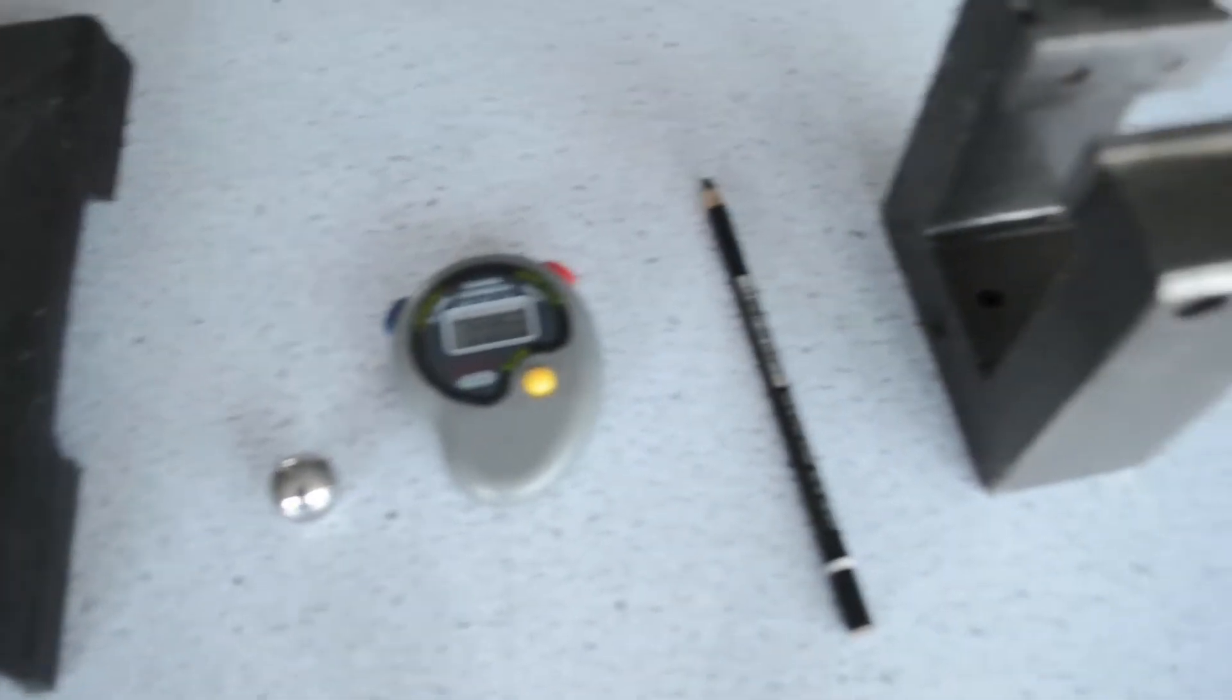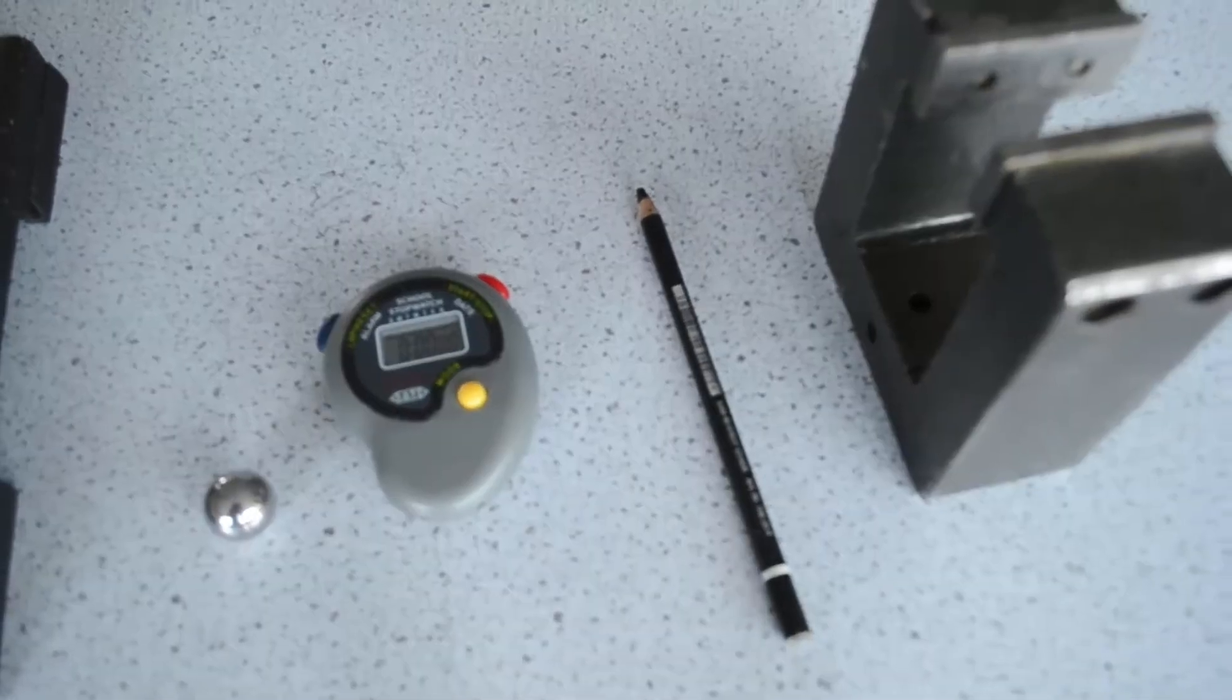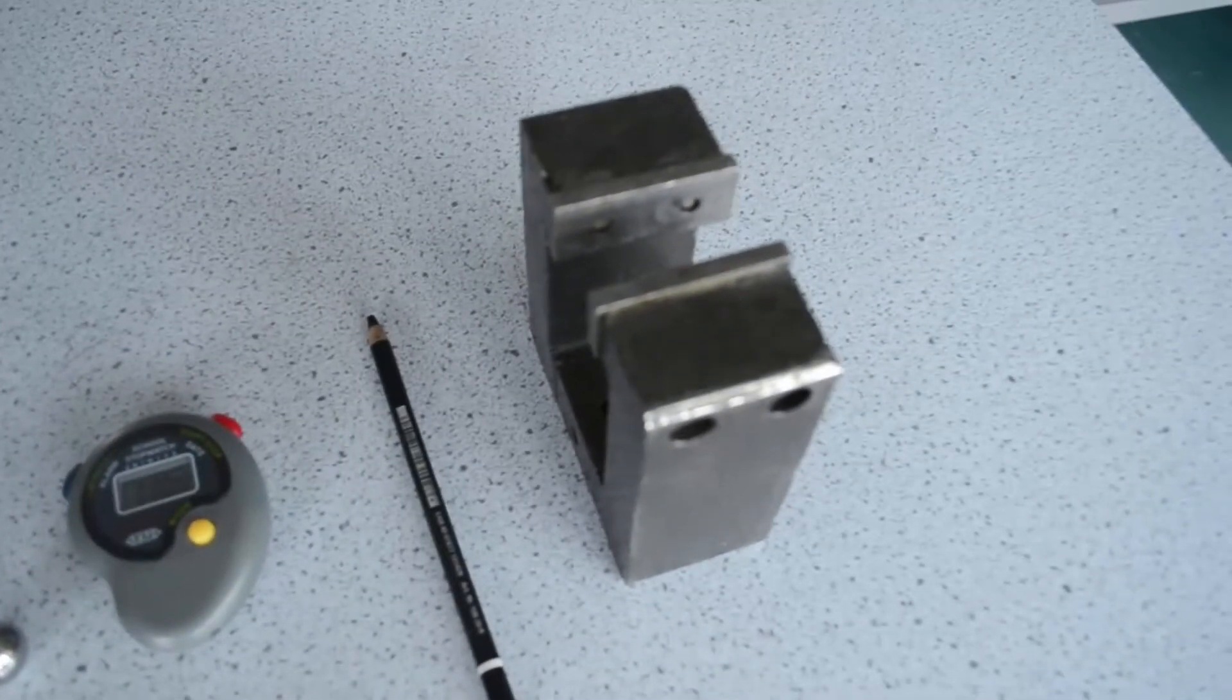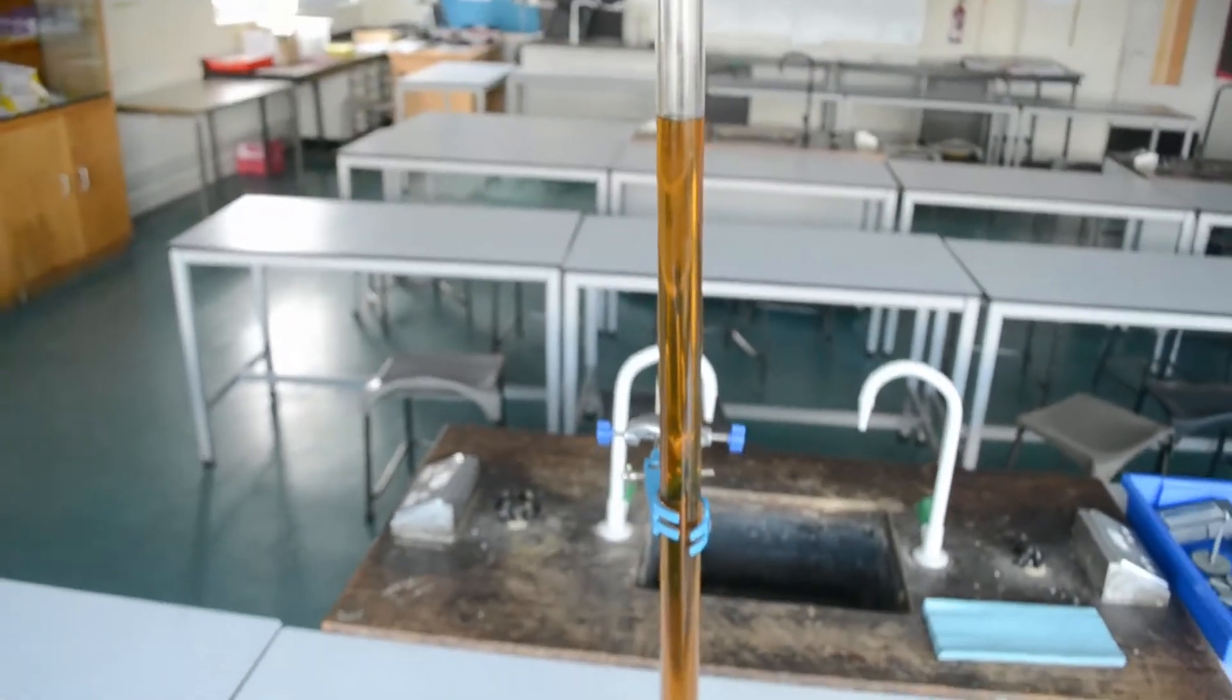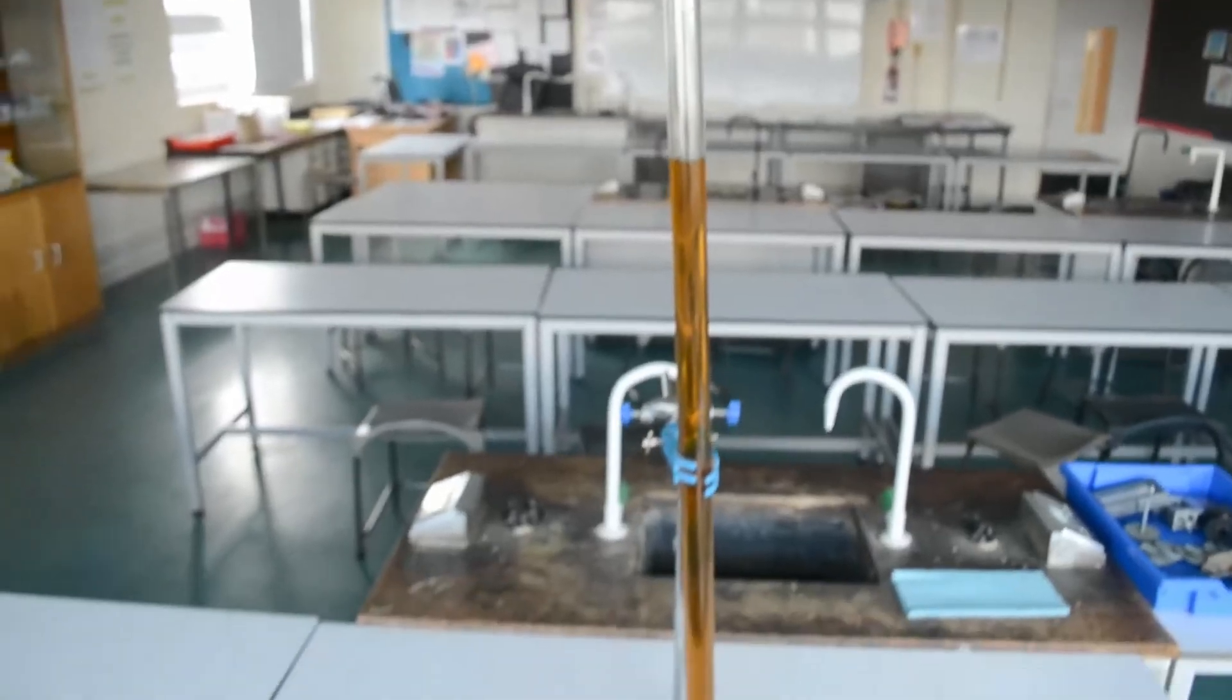We have a stopwatch, we have a chinagraph pencil - you could also use rubber bands instead, I'll explain that later - and we have a magnet. Most importantly, we have a tube that is filled with a viscous fluid, a thick oil.